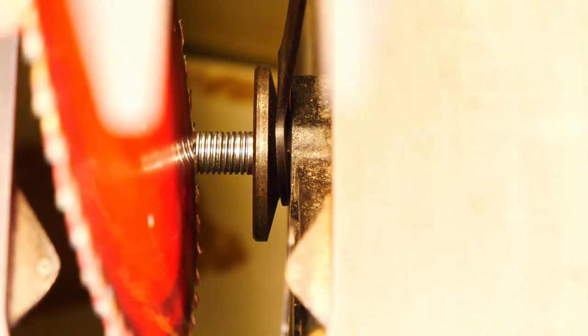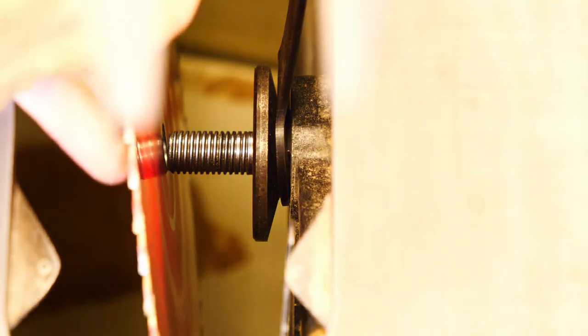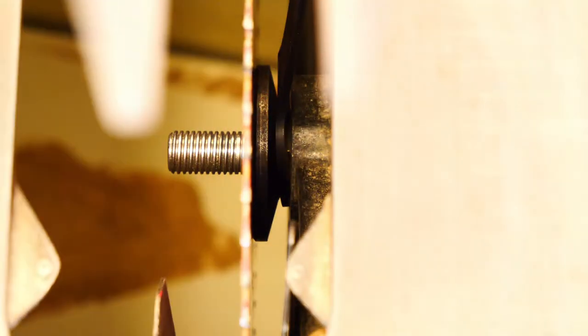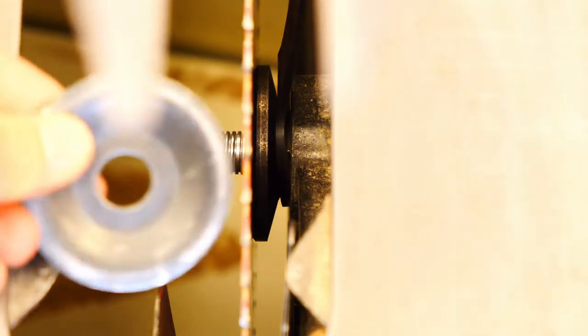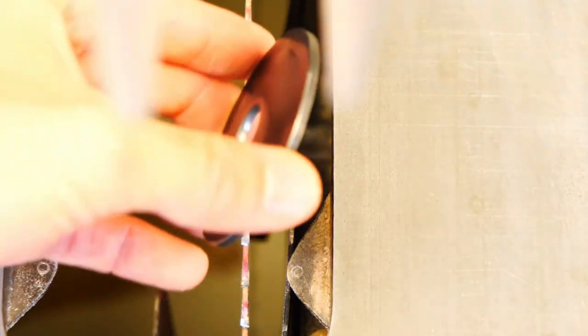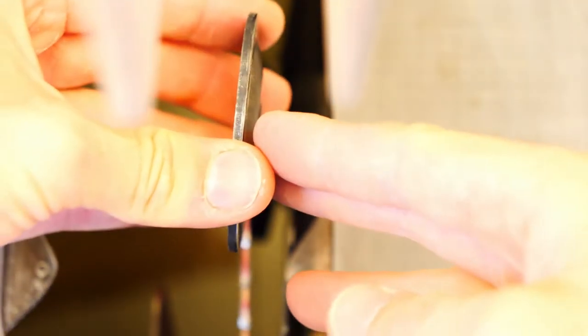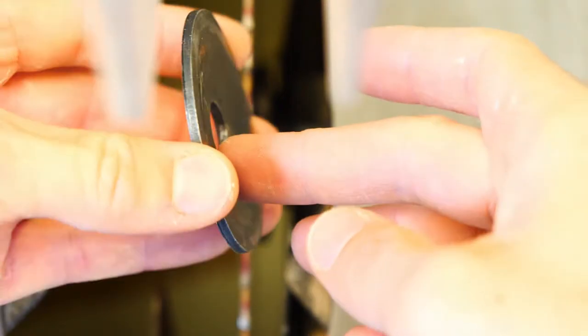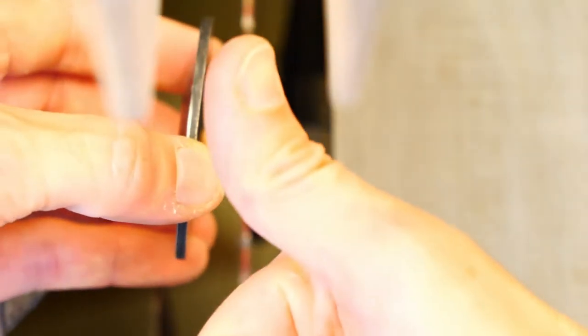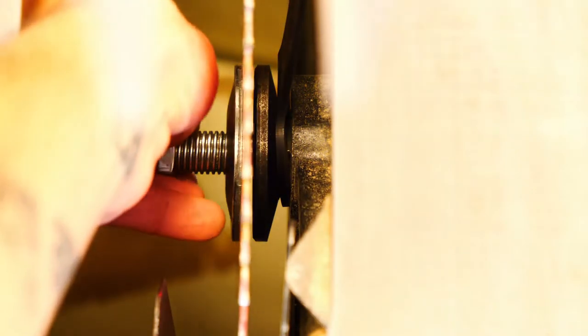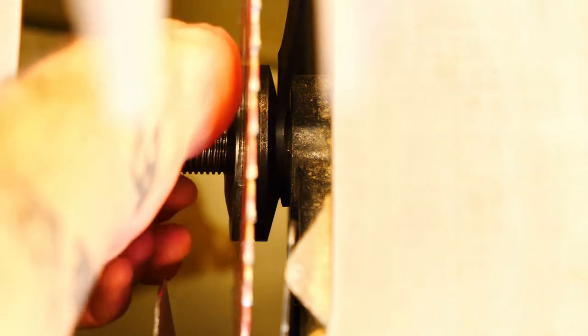Go ahead and slide our blade on with the teeth facing the operator, and then we'll place our washer back on with the concave section pointing outward like so. We don't want the washer facing out as it will not securely clamp the blade to the arbor. So we'll place the washer back on and we'll grab our nut and we'll thread it away from the operator as it is reverse threaded.